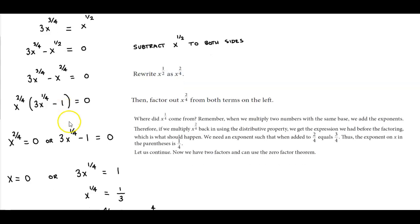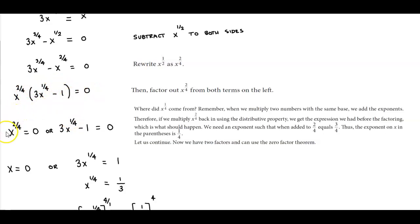So the next step is to use the zero product rule. We have x to the 2 fourths which is equal to zero, or 3x to the 1 fourth minus 1 is equal to zero.